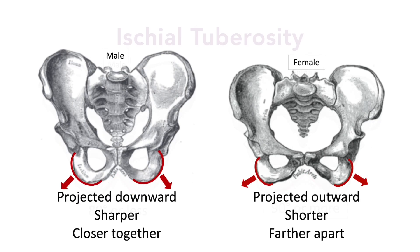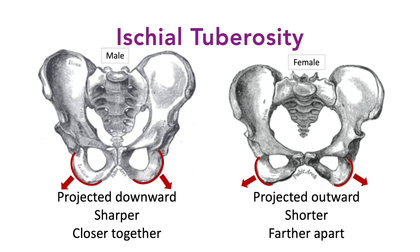The ischial tuberosities also differ. The ischial tuberosities are the paired, rounded rami of the ischial bones and mark the lateral boundary of the pelvic outlet. In males, the ischial tuberosities are closer together and projected downward. In females, they are farther apart and projected outward.